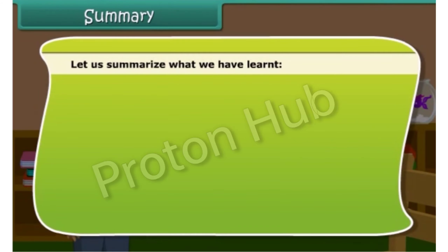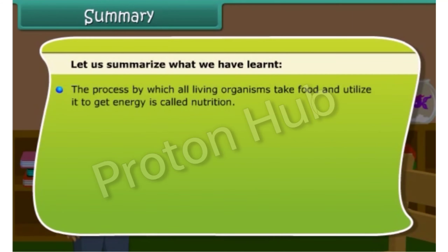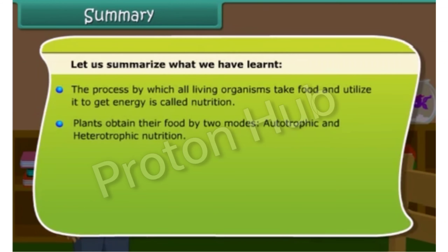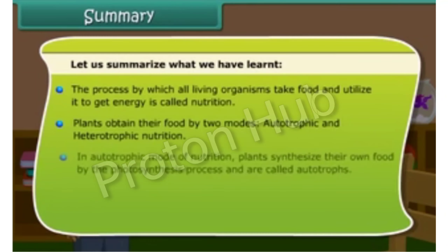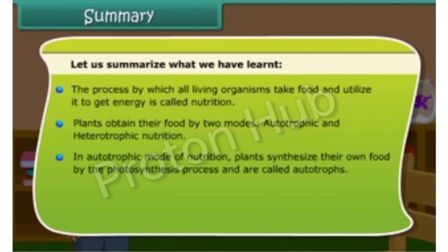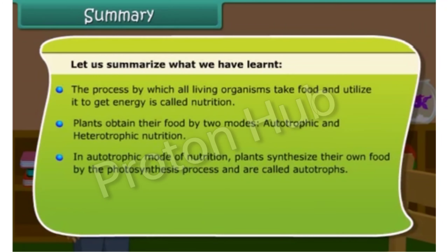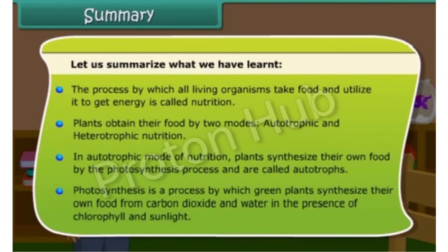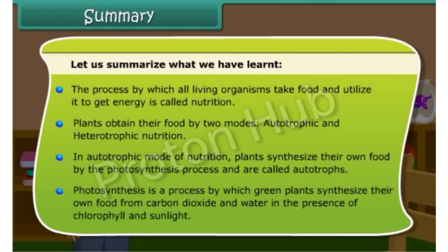Let us summarize what we have learned. The process by which all living organisms take food and utilize it to get energy is called nutrition. Plants obtain their food by two modes: autotrophic and heterotrophic nutrition. In autotrophic mode, plants synthesize their own food by photosynthesis and are called autotrophs. Photosynthesis is a process by which green plants synthesize food from carbon dioxide and water in the presence of chlorophyll and sunlight.